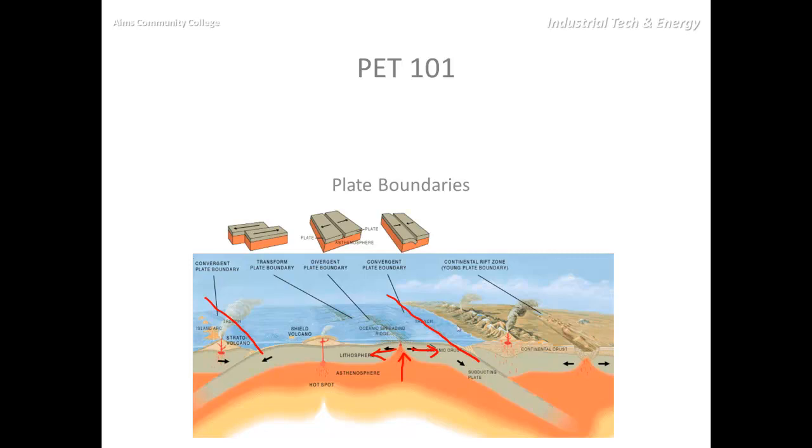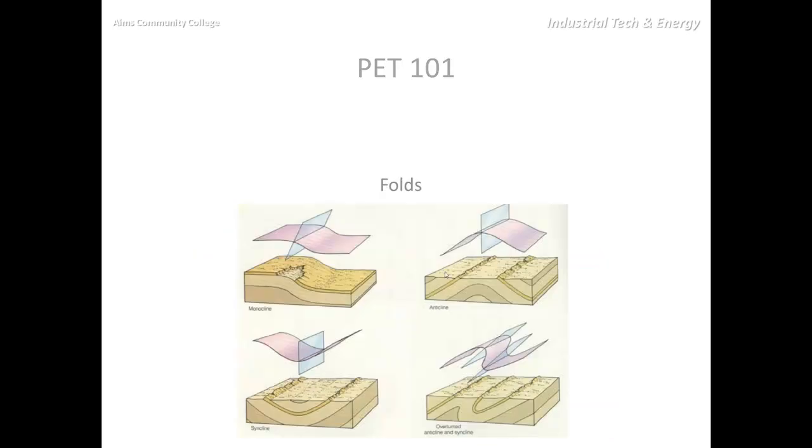So what happens when we have two plates interacting with one another? Well, here we see this mountain range, and this range is formed because this plate is getting squeezed. In fact, it's probably getting squeezed in one of these fashions, and I would venture that it's probably this anticline right here.